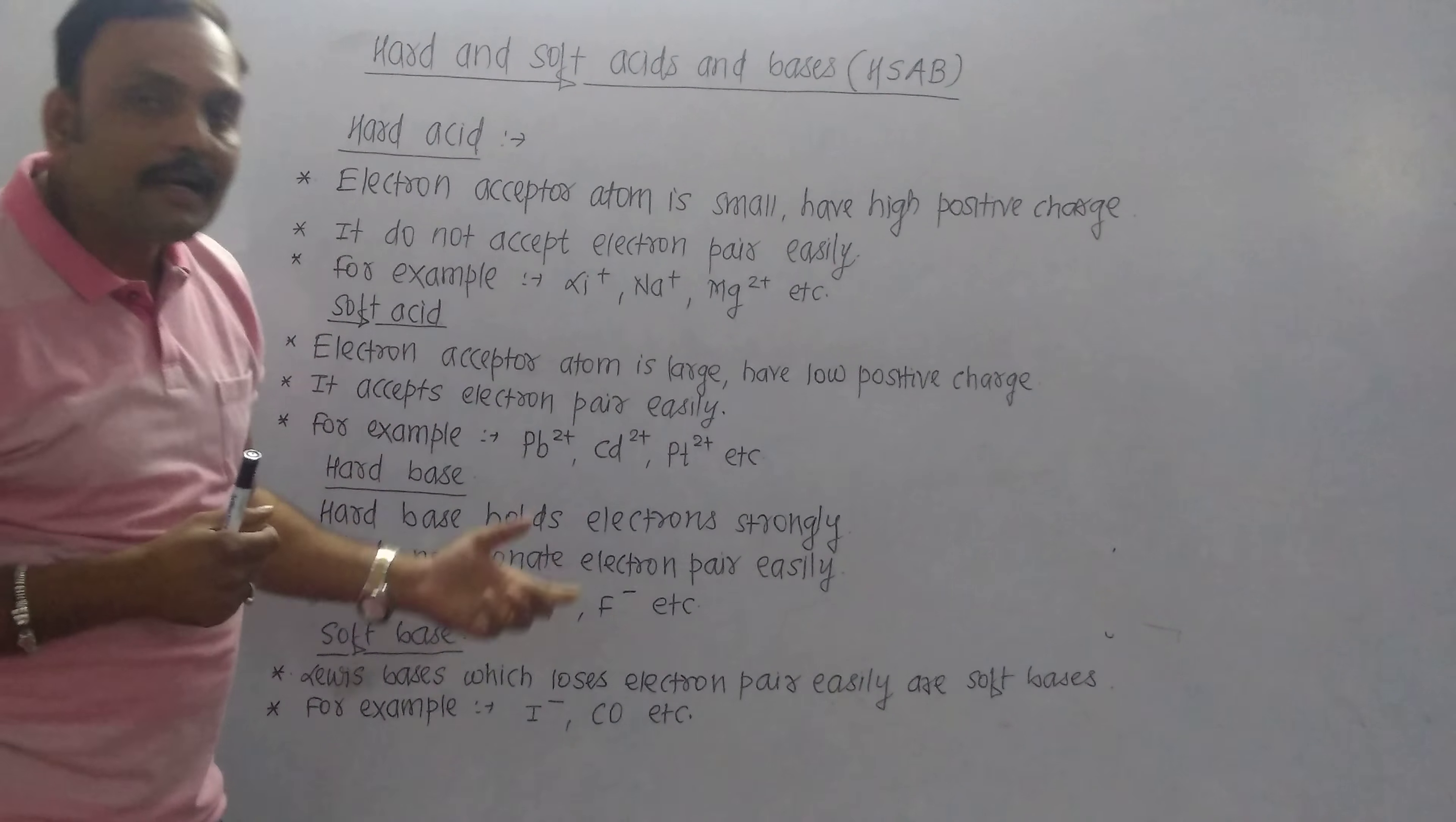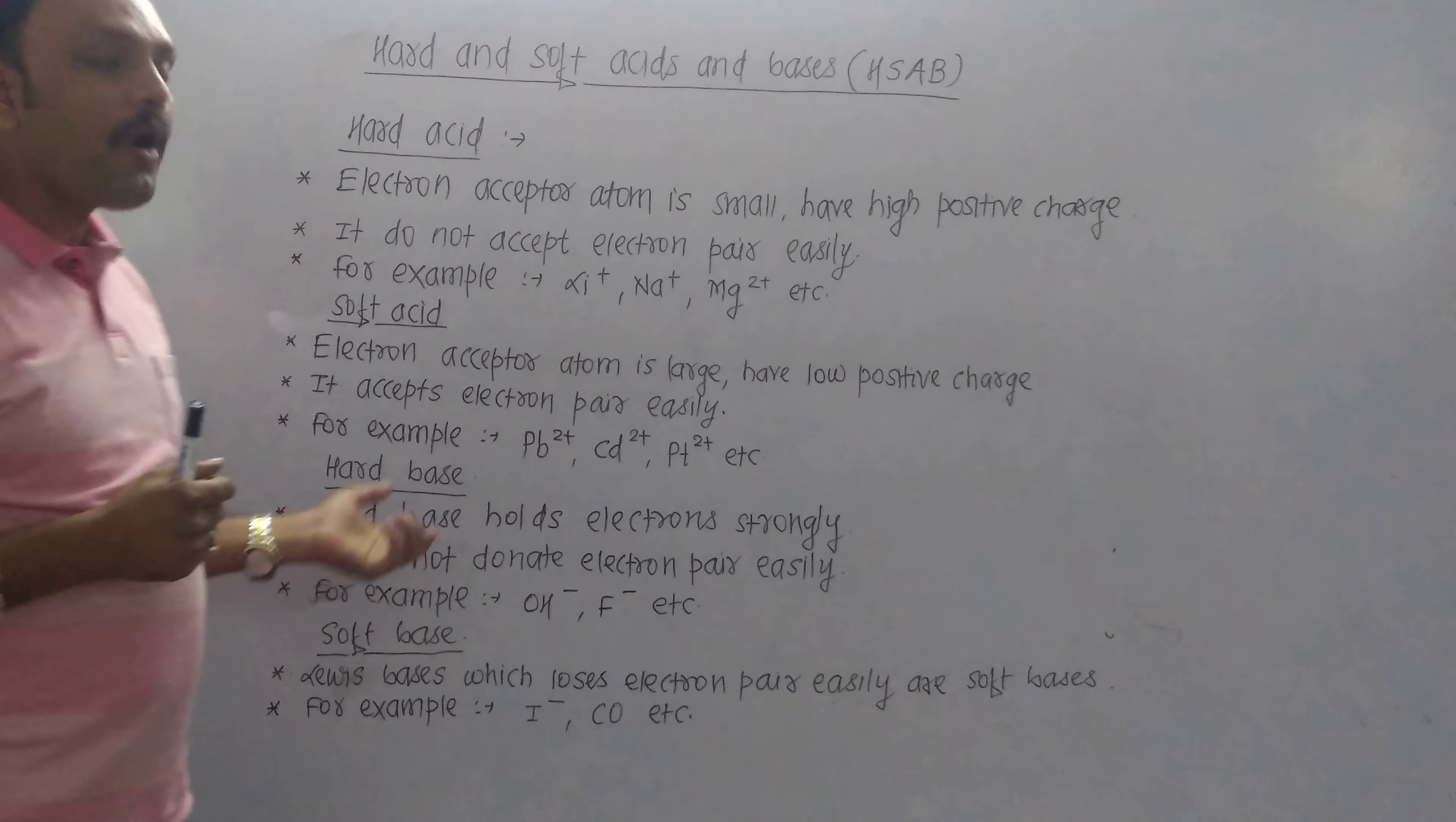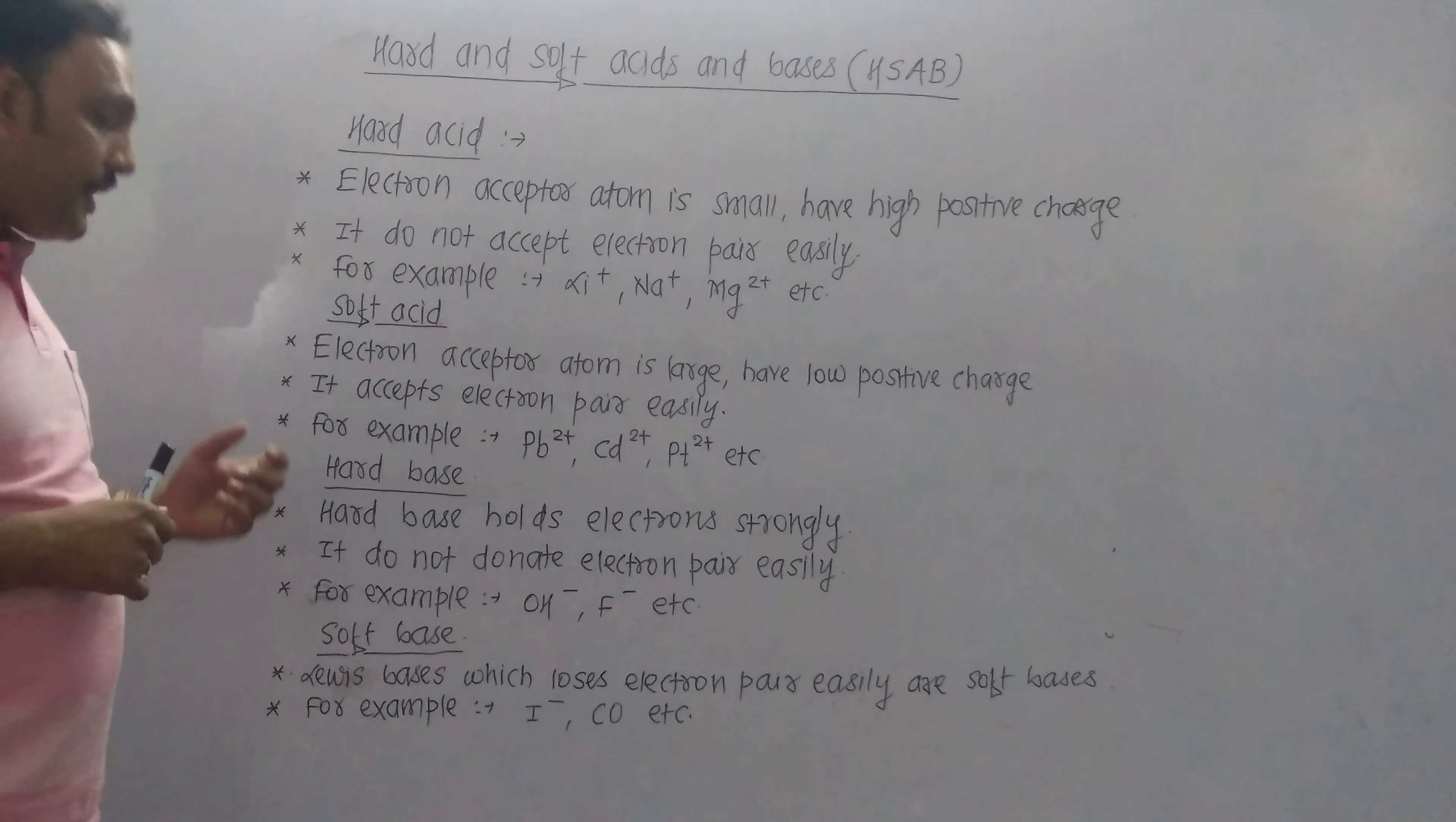What is a hard base? A hard base holds an electron pair strongly, so it does not donate a pair of electrons easily. Examples are OH-, F-.